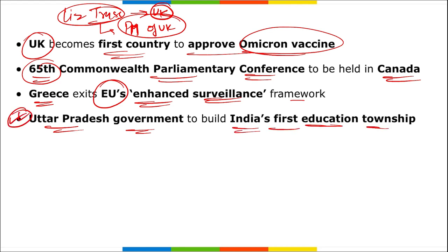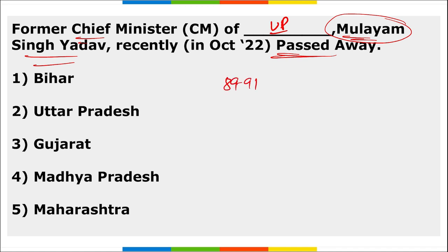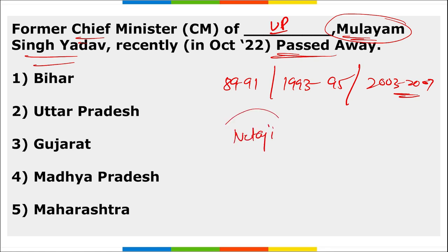The Uttar Pradesh government is set to build India's first education township — mark this. Former Chief Minister Mulayam Singh Yadav recently passed away. He served as Chief Minister of Uttar Pradesh from 1989–1991, 1993–1995, and 2003–2007. He was often referred to as 'Netaji.'